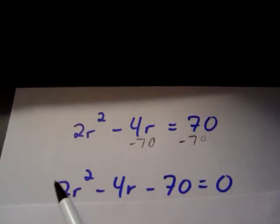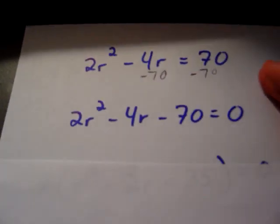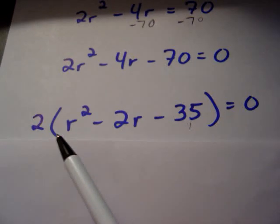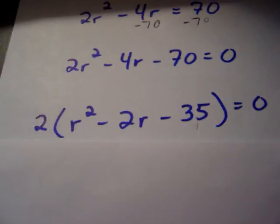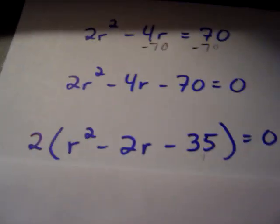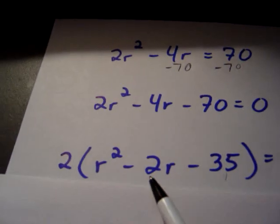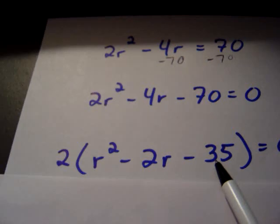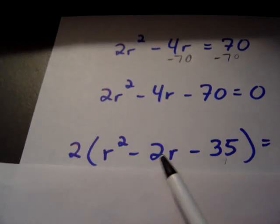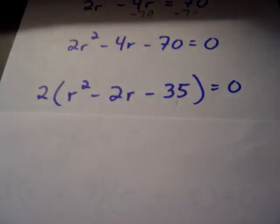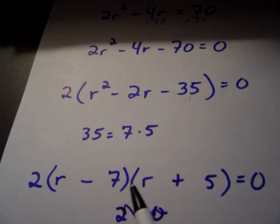As we begin to factor, is there a common factor we can pull out between 2, 4, and 70? We sure can, because they're all divisible by 2. Factoring out the 2, we now have 2 times the quantity r squared minus 2r minus 35. For this trinomial, we need a number times a number that gives us negative 35 and a difference of negative 2. With 35, you'll go with 7 and 5 — 7 times 5 gives 35, and they have a difference of 2. So we get 2 times r minus 7 times r plus 5.